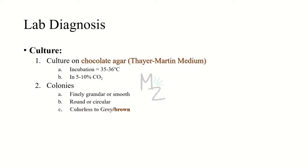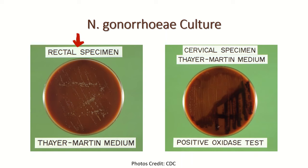Culture: this bacterium is cultured on chocolate agar, not on blood agar. Chocolate agar is incubated at 35 to 36 degrees Celsius in 5 to 10 percent carbon dioxide. Colonies formed are finely granular or smooth, round or circular, and vary from colorless to gray or brown in color. Thayer-Martin medium can also be used as a selective medium. As you can see, Neisseria gonorrhea taken from a rectal sample grown on Thayer-Martin agar shows round colonies ranging from colorless to brownish, and a cervical specimen on Thayer-Martin medium shows a positive oxidase test indicated by a black color.